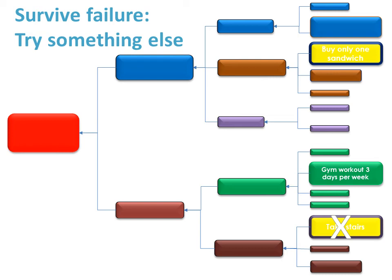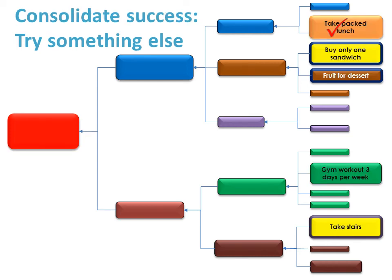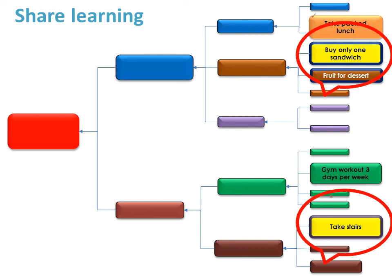A key benefit of driver diagrams is a ready supply of alternative options if one proves unsuccessful, so it helps you to survive failure. If something doesn't work, you can try something else — another change project from the same driver branch, or something completely different. In the same way, success can be built upon with further projects from the same or complementary driver branches. Because it's a visual representation of your strategy, if displayed prominently it can act as a prompt to remind people to celebrate success and learn from failures through the life of a project.